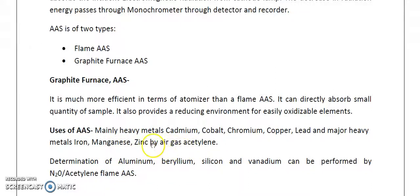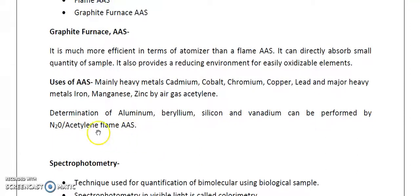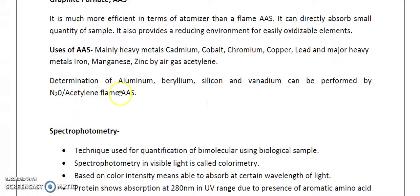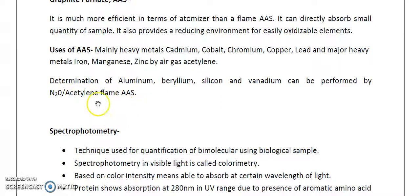These heavy metals are determined using air-acetylene flame atomic absorption spectrophotometry. For further details, one can refer to Environmental Chemistry by Manhan, where it is very nicely explained. Determination of aluminium, barium, beryllium, silicon, and other elements can also be done by flame AAS, where the fuel source is nitrous oxide (N₂O) or acetylene flame.